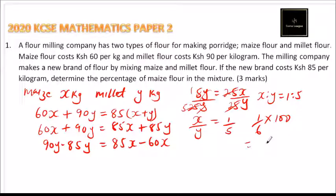And if you multiply that by 100, you will be able to get 100 divided by 6, that will be 16 and two-thirds percent. So that is the percentage of maize that will be in the mixture so that it costs 85 shillings. And that is how you solve that question.